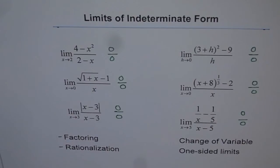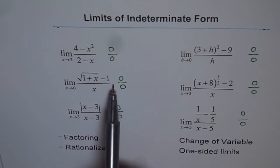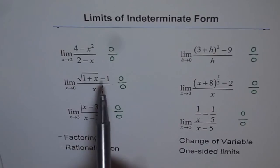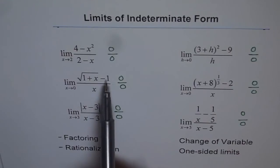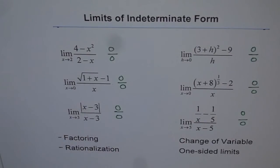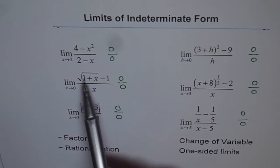Next technique is rationalization. Wherever you have a square root like this, we can rationalize the function. Once you rationalize, then you can simplify and find the limit. So here to rationalize, you are going to multiply and divide by square root of 1 plus x plus 1. And then when you expand the numerator, you get difference of squares and you can factor out x. So that is what we are going to do wherever we have a square root function. So rationalization will be used for expressions where we have square root.